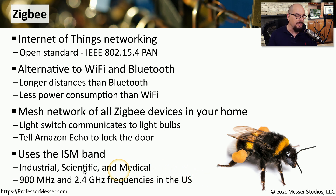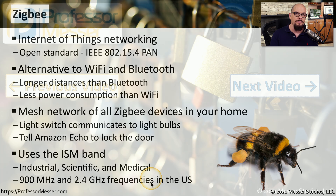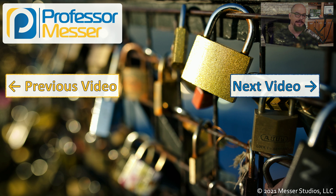In the United States, ZigBee communicates over the ISM band — the industrial, scientific, and medical band — using frequencies in the 900 megahertz and 2.4 gigahertz ranges. This means you can have all of your IoT devices meshed together and communicate wirelessly without any special licensing required to operate on these frequencies.